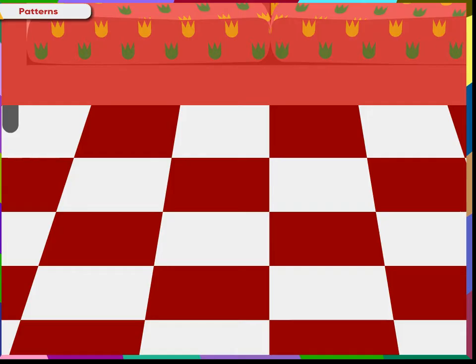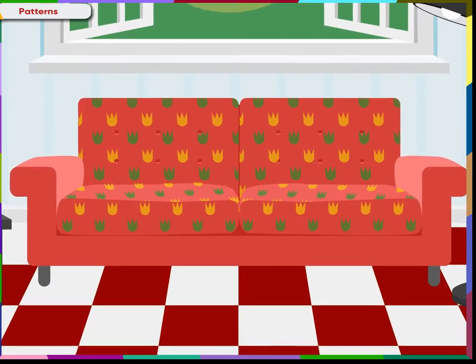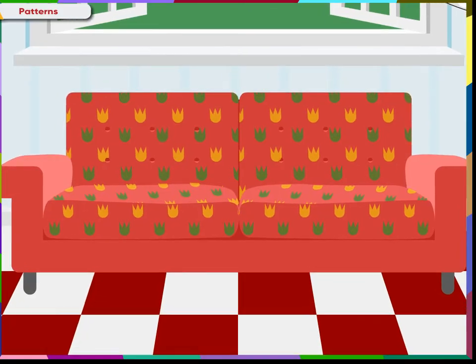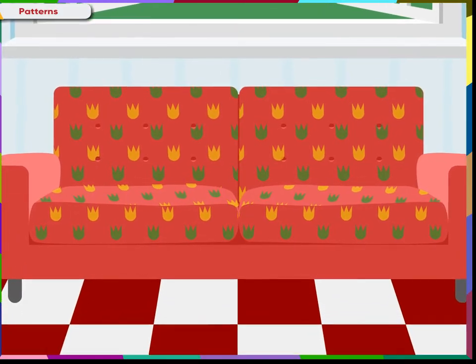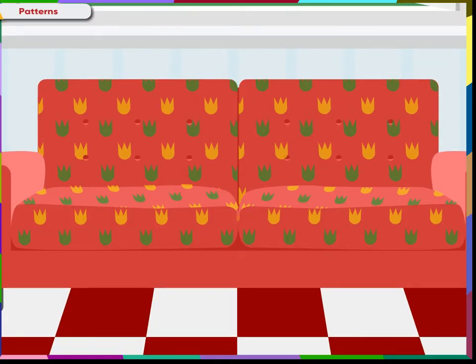Patterns can be of flower designs as shown on this sofa. The green and yellow flowers repeat itself to make the sofa look so good. Yes, Mom! Patterns can be made using curved lines, straight lines or both.